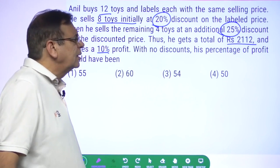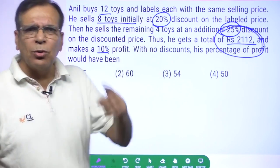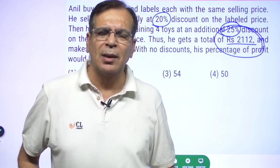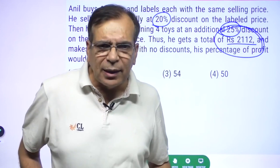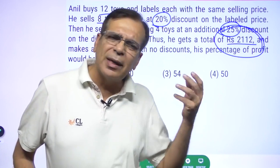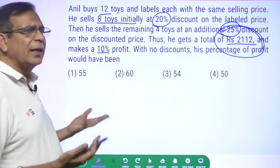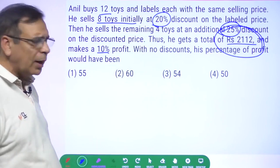Do you know what is the problem with this question? This number 2112 is going to help you waste your time. The examiner has put this in deliberately so that you waste your time. This number is of no value. All my answers are in percentages. Everything is in percentage. Why do I need that?